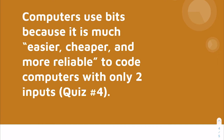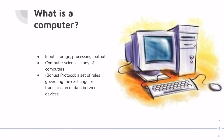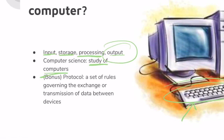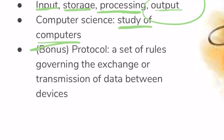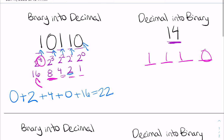Computers use bits because it is much easier, cheaper, and more reliable to build computers that only have two inputs. A computer is input, storage, processing, and output. Computer science is literally just the study of computers. A protocol is a set of rules governing the exchange or transmission of data between devices.